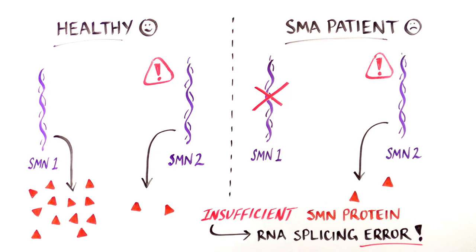Remember, RNA editing is the process of forming a coherent RNA message by removing the gibberish letters, or introns. But what is this mistake and how does it cause SMA?